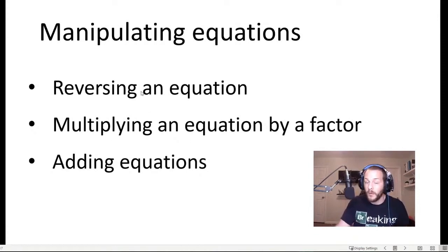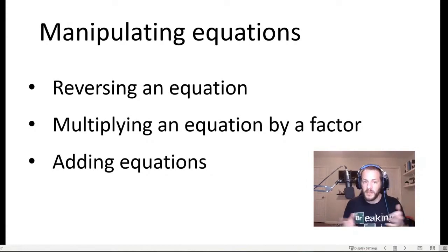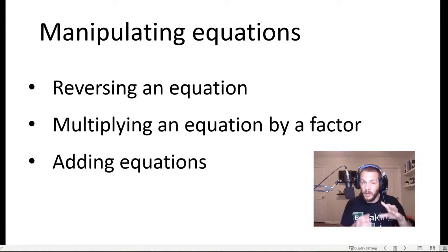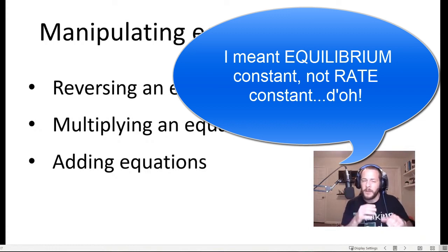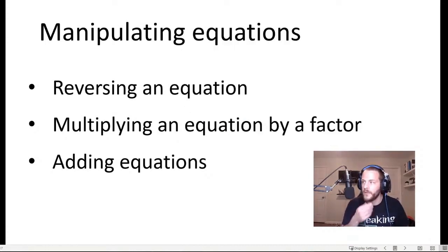One of them is reversing an equation, so the products become reactants and the reactants become products. Another is multiplying the equation by a factor, so you multiply all the coefficients in the balanced chemical equation by a factor. And finally, another manipulation would be adding two or more equations together to form an overall reaction — so how would we arrive at an equilibrium constant for that overall reaction, knowing the constants for the individual reactions? We're going to go through each scenario and explain how the mathematics works.